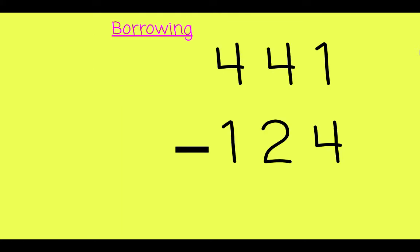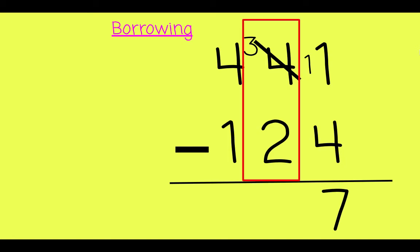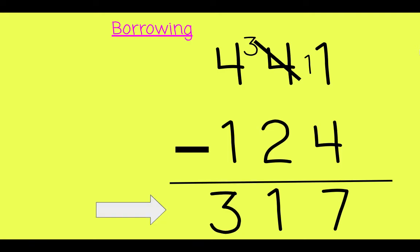Let's try a 3-digit number without the base 10 blocks to see if we remember. We can't take 4 away from 1 because it's greater than 1, so we need to borrow 10. Good. 11 take away 4 is 7. 3 take away 2, or 30 take away 20. We're left with 1 down there, and 4 take away 1 is 3. 317 is our answer.